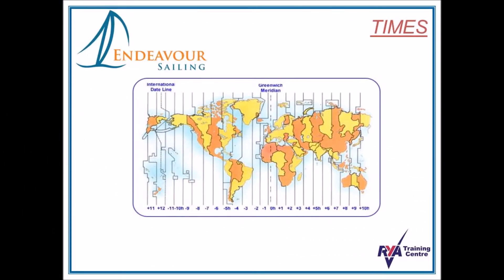Times around the world are split into different time zones. You do not need to know all of these time zones, but it is important that you understand how it is written within the nautical almanacs. So let's take France, for example. As you probably know, and you can see here, France is one hour ahead of us.